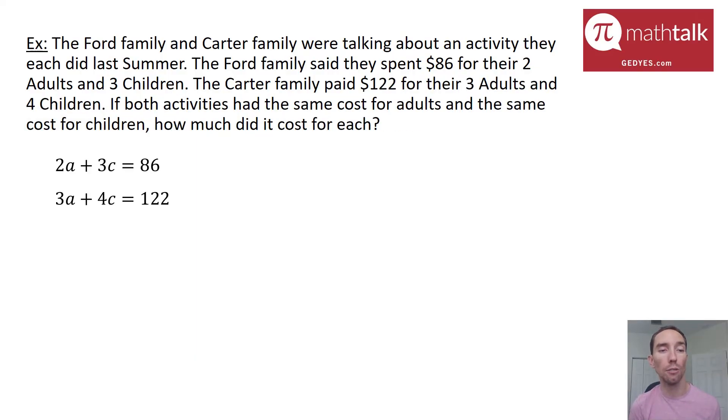Now I have my two equations I can use to solve using systems of equations. Unfortunately, I don't have anything that says one variable equals a quantity, so I can't use substitution. So I look at elimination. None of my corresponding variables have the same coefficient. The A's are different and the C's are different, which means I need to use that trick of multiplying at least one of my equations by some number so that I can make the coefficients be the same.